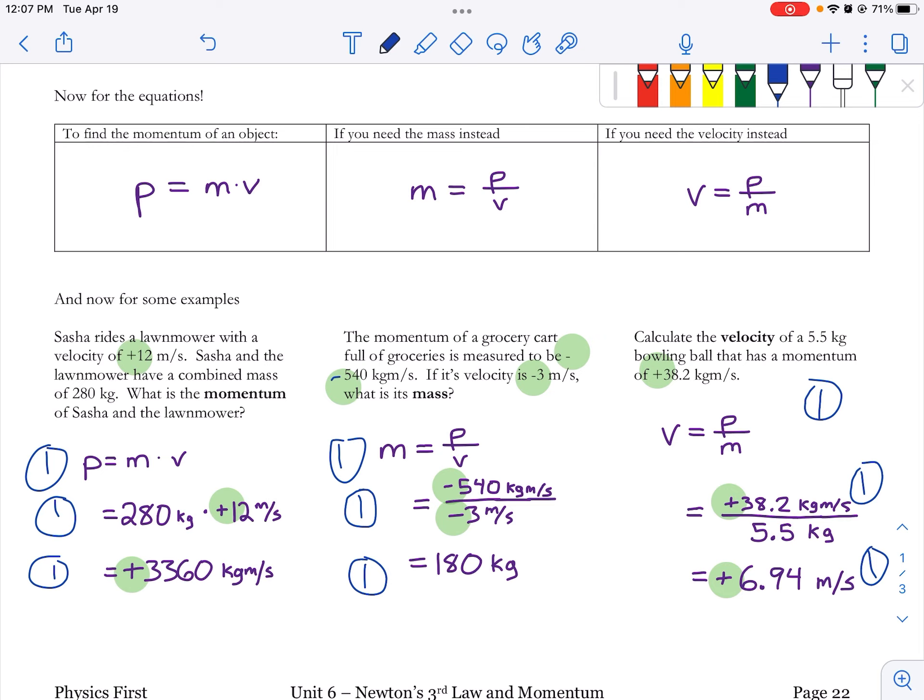If you had one of each of these kind of problems, like find the momentum, find the mass, and find the velocity, it's probably going to be worth 10 points altogether. And this last extra 10th point, even though there's three steps to each of these, it's probably going to be for the directions.